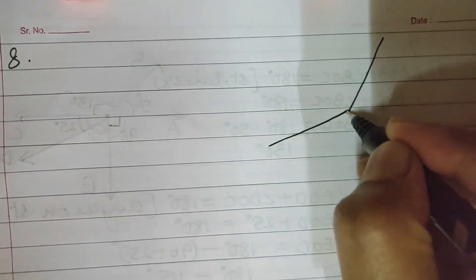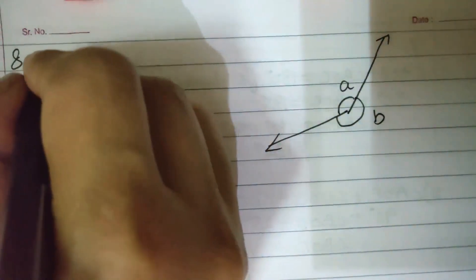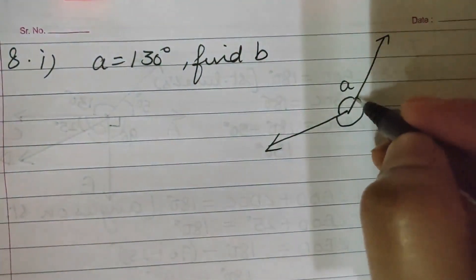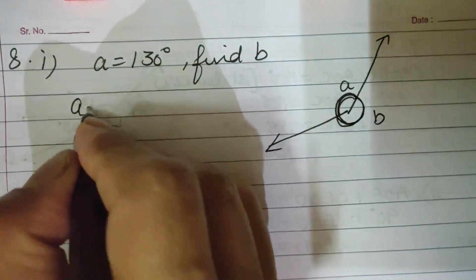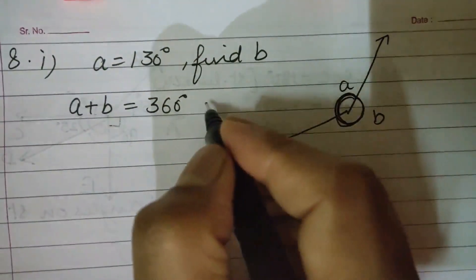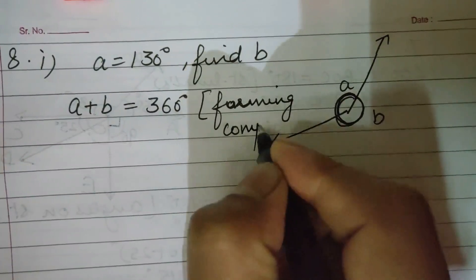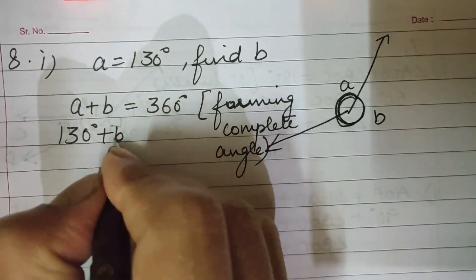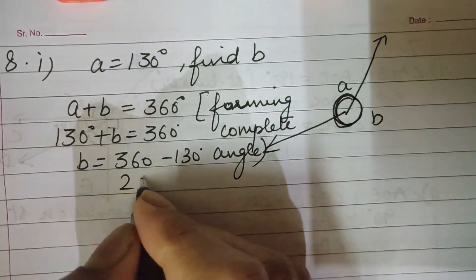Sum number eight: a figure is given with angle A and angle B. First part: angle A is given as 130 degrees — find B. Angle A and B together make a complete circle, so angle A plus angle B equals 360 degrees. Therefore B equals 360 minus 130, which is 230 degrees. Third part: A is given as 5/3 right angles. Since a right angle is 90 degrees, angle A equals 150 degrees. So B equals 360 minus 150 equals 210 degrees.